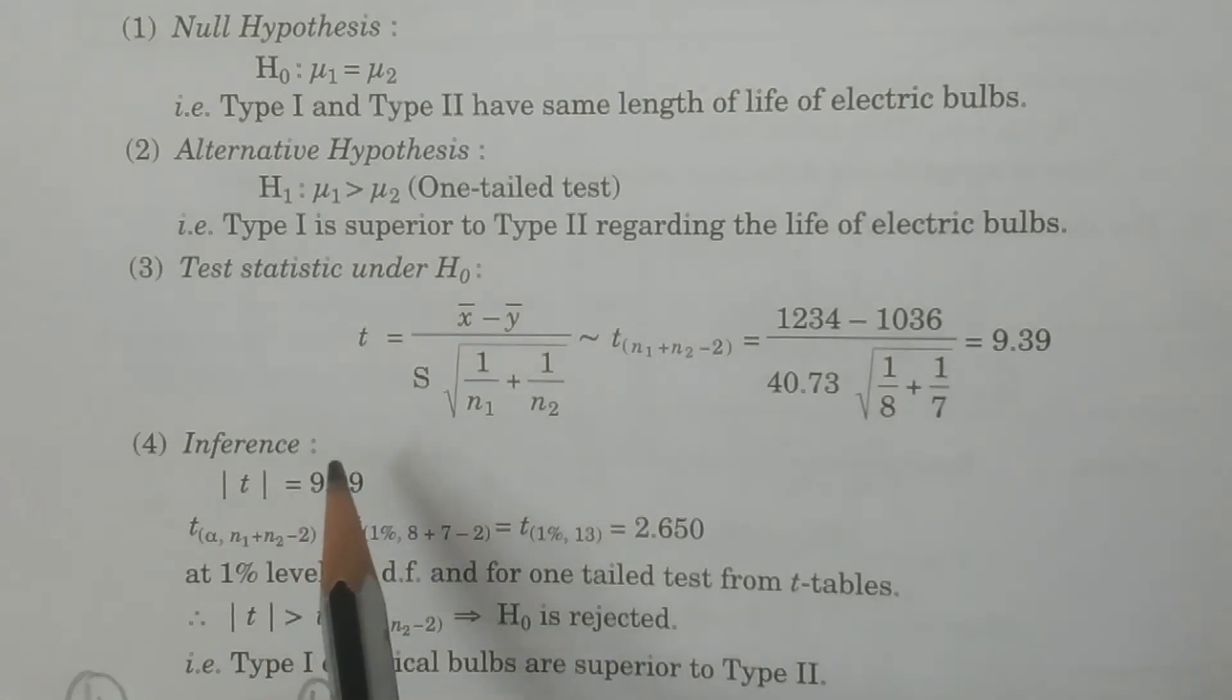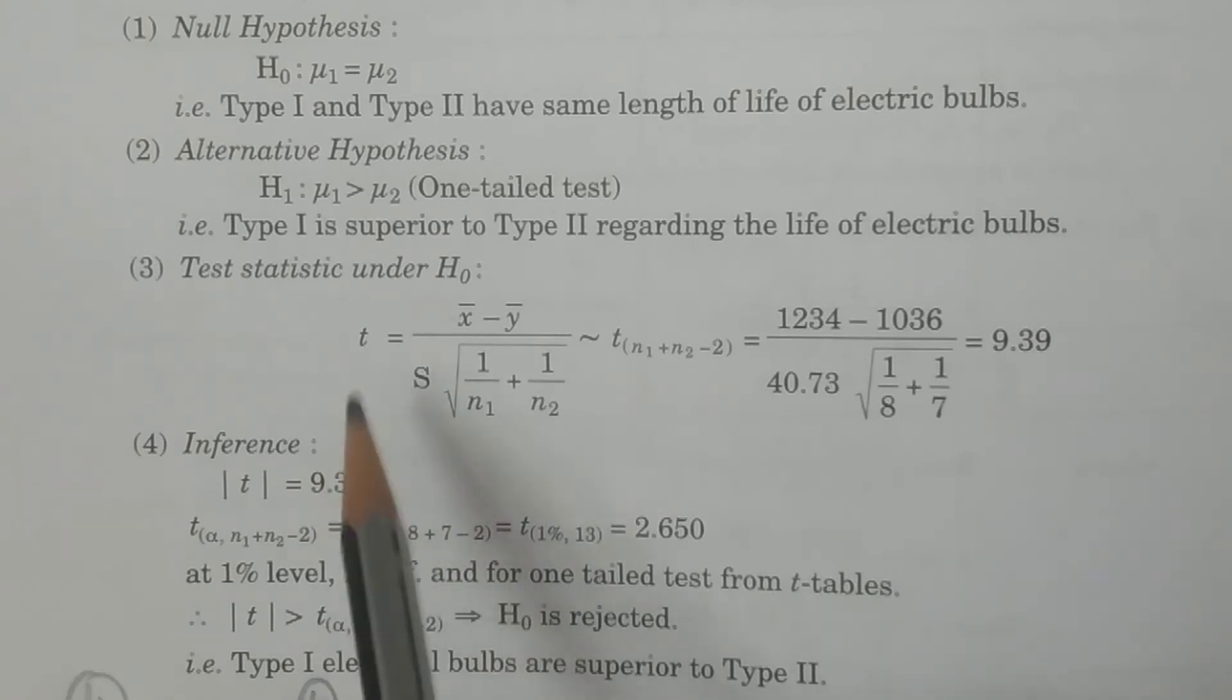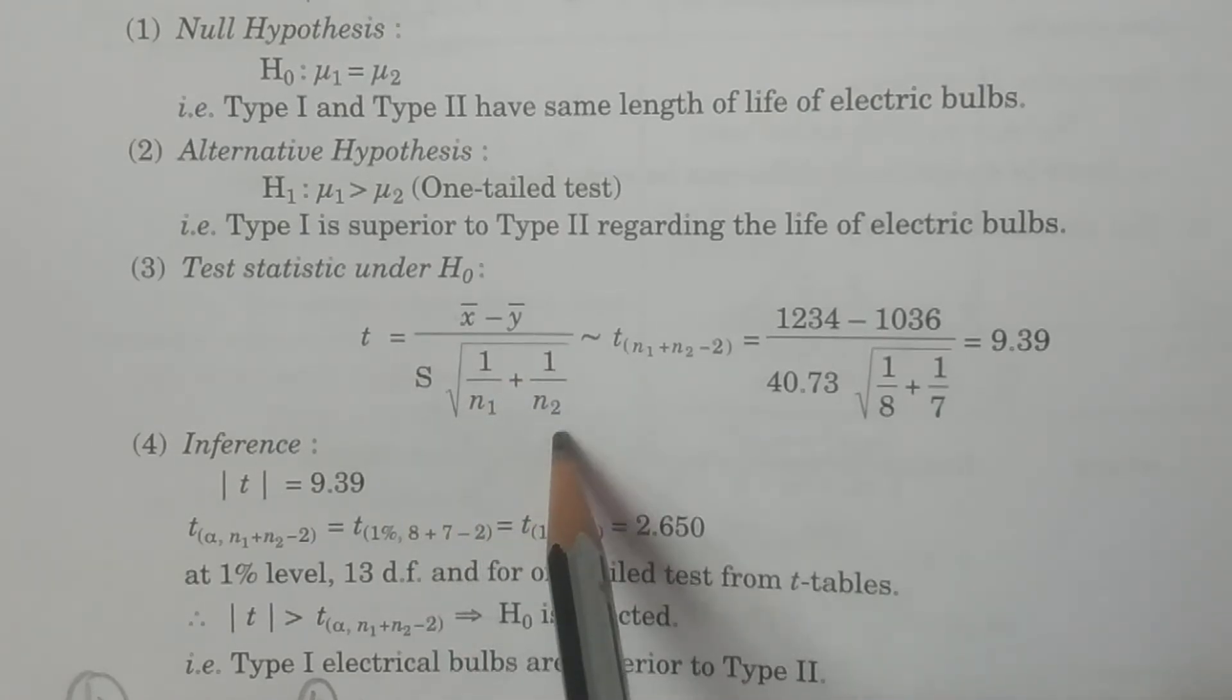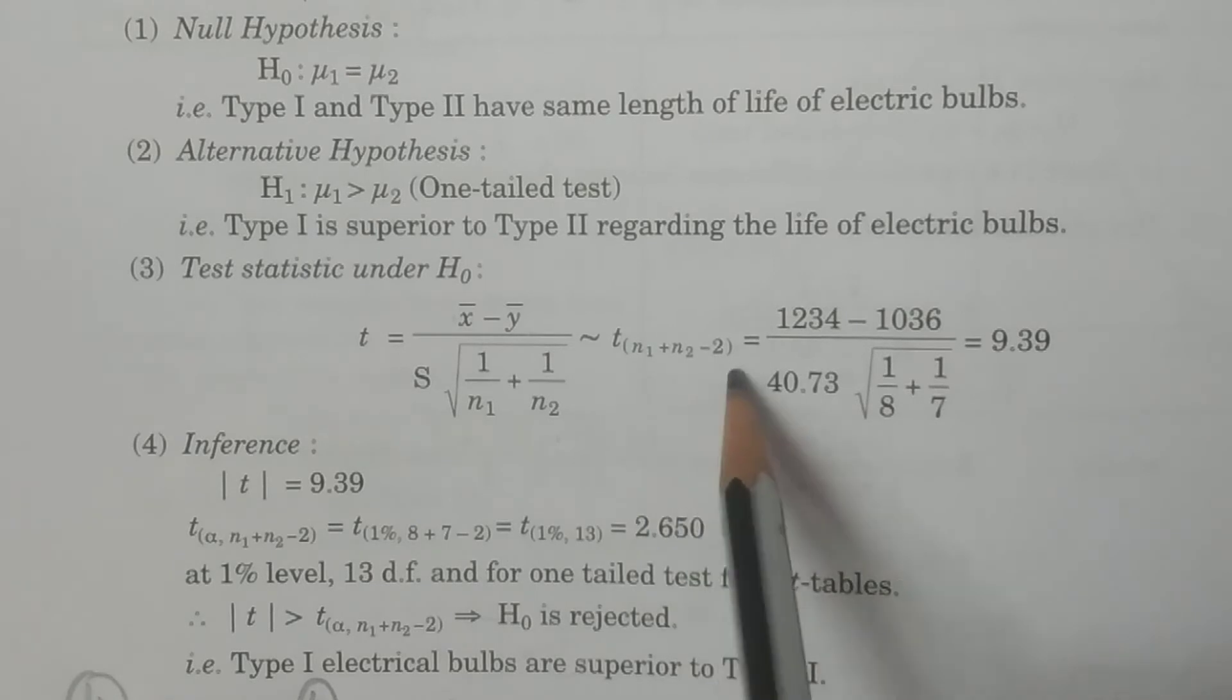So therefore, we have to use that test statistic under H₀: t-distribution. We have to use t-distribution. The statistic t equals (x̄ - ȳ) divided by S times square root of (1/n1 + 1/n2), which follows t with n1 + n2 - 2 degrees of freedom.